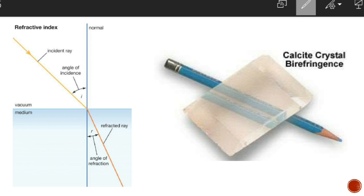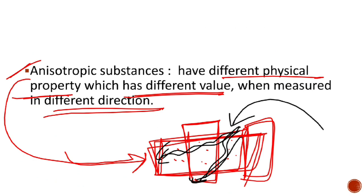So birefringent and anisotropic substances are best examined using the polarizing microscope. We have discussed the polarizing microscope. As homework, you should also learn the basic structure of the microscope used in school — the primary level microscope. What is the eyepiece? What is the sample stage? What is the light source? What is the objective lens?